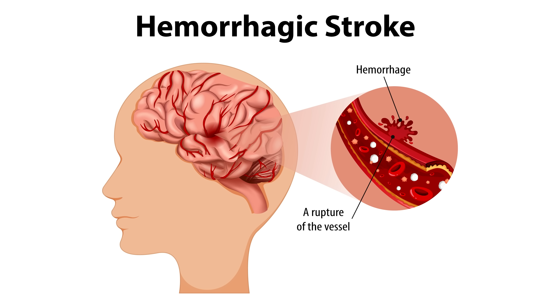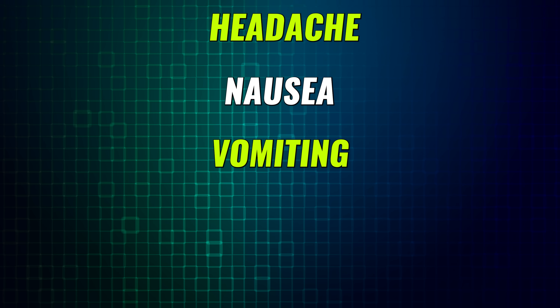But if someone has a hemorrhagic stroke that occurs in the cerebellum, they're most likely going to have headache, nausea, vomiting, and dizziness — a completely different set of symptoms from a stroke in another part of the brain. Or maybe someone has a small ischemic stroke in another part of the brain where the symptoms end up being so mild or even absent that the person might not even know they had a stroke.